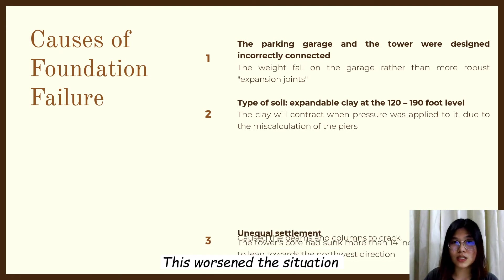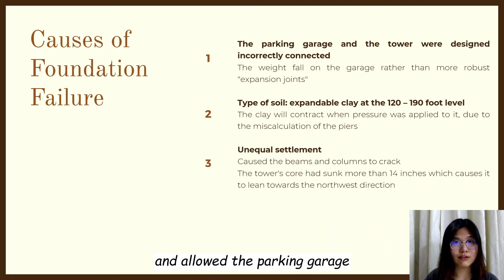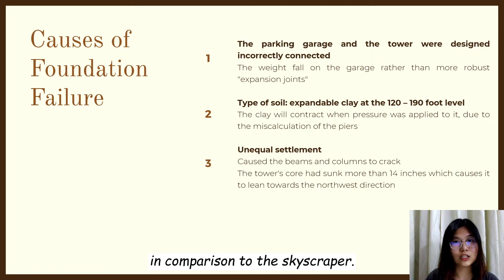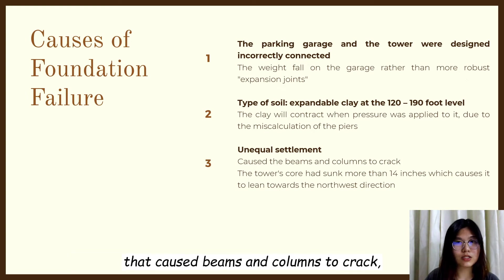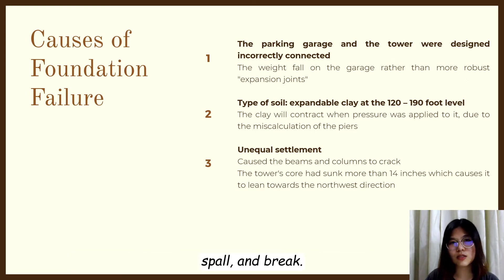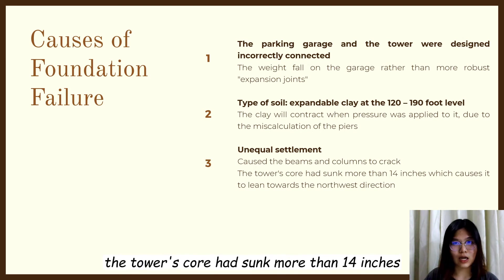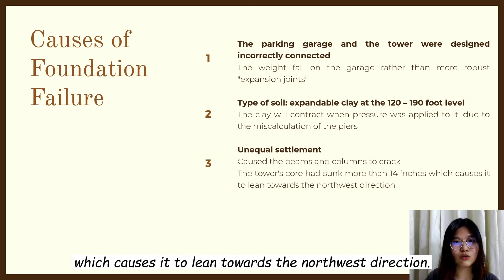This worsened the situation and allowed the parking garage to remain comparatively unsettled in comparison to the skyscraper. The unequal settlement stressed the beams and columns, causing them to crack, spall, and break. Therefore, the tower's core had sunk more than 14 inches, causing it to lean towards the northwest direction.